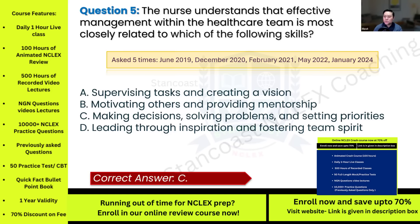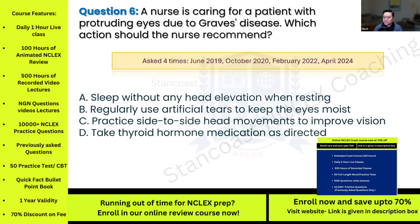Question six: A nurse is caring for a patient with protruding eyes due to Graves' disease. Which action should the nurse recommend? This question has been asked four times. Options: A) sleep without any head elevation when resting; B) regularly use artificial tears to keep the eyes moist; C) practice side-to-side head movements to improve vision; D) take thyroid hormone medication as directed.